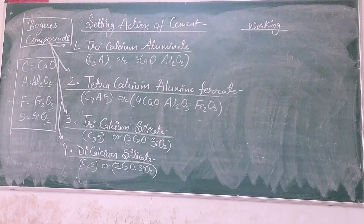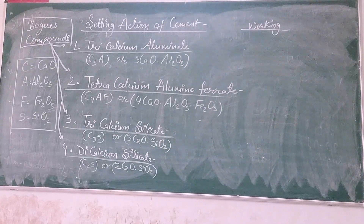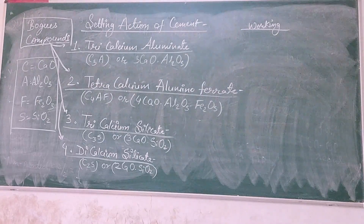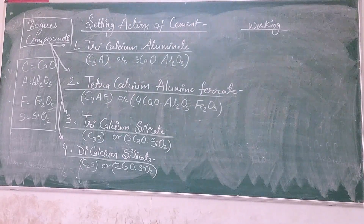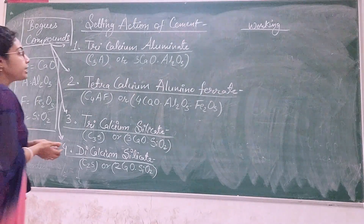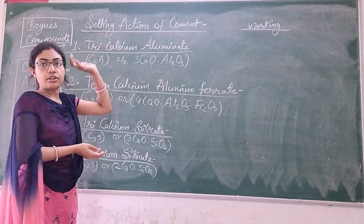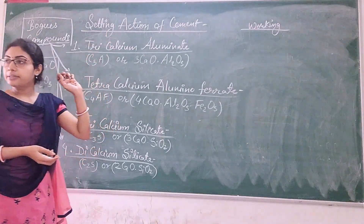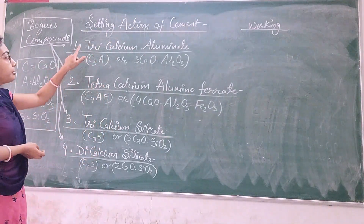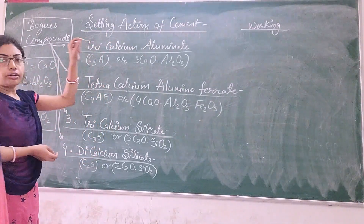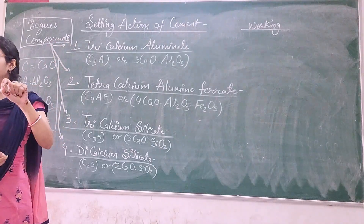Your initial setting time is 30 minutes and your final setting time is 10 hours. Whenever anybody asks you a viva question, you need to answer 30 minutes or 10 hours. Now how this varies from 30 minutes to 10 hours — that is your setting action of cement.